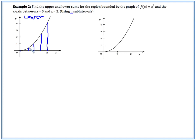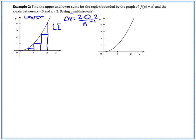For the lower sum we're going to be inscribing our rectangles, so we're going to be looking for left endpoints. This is going to be our left-hand sum. The first thing we need to find is our delta x, and that's going to be the difference in the interval: 2 minus 0, divided by how many subintervals, which is n. So our delta x is 2 over n.